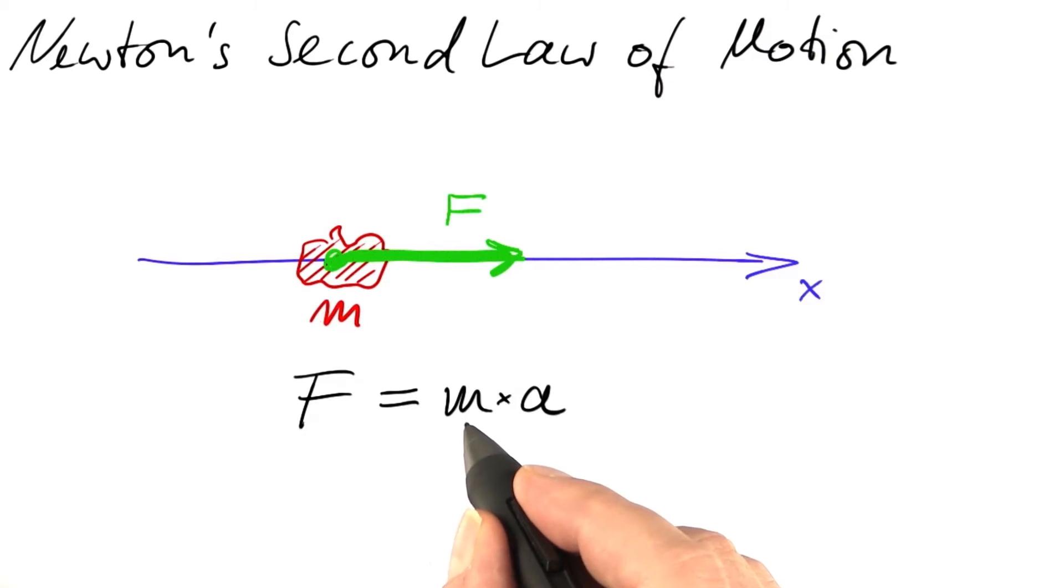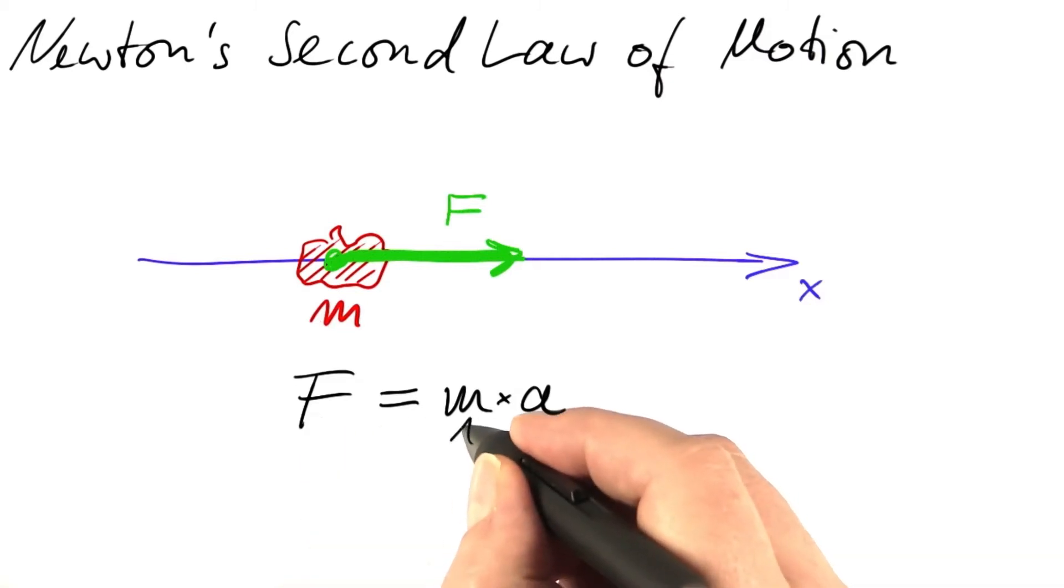If we want to accelerate an object of twice the mass, we need twice the force. Mass is measured in kilograms internationally.